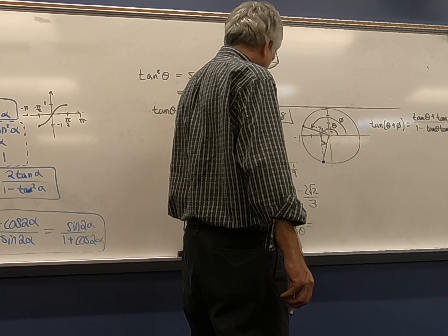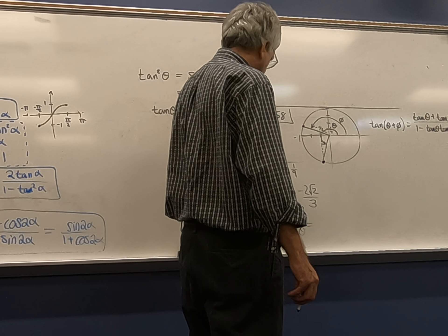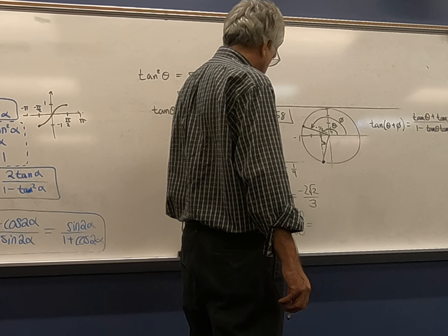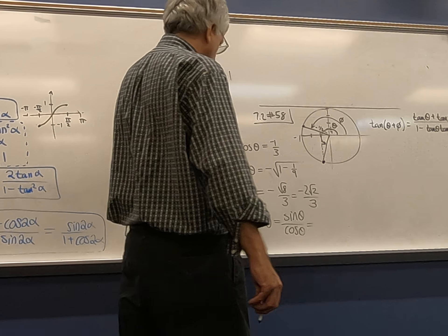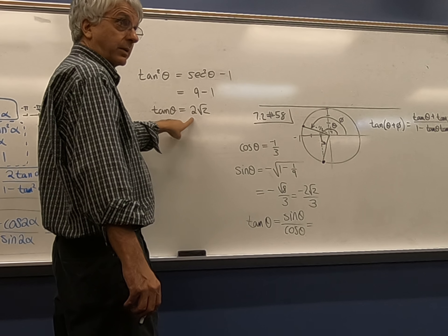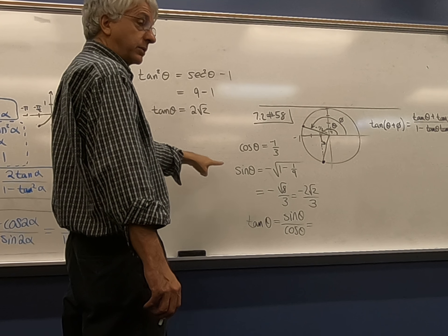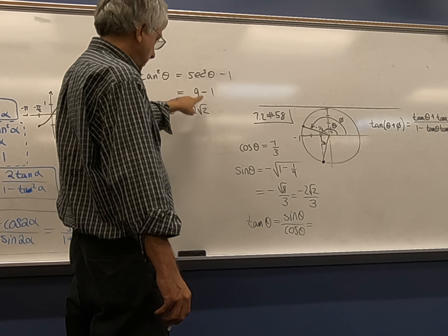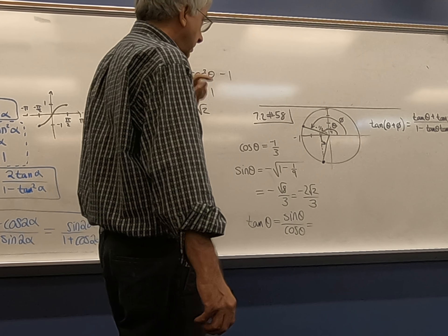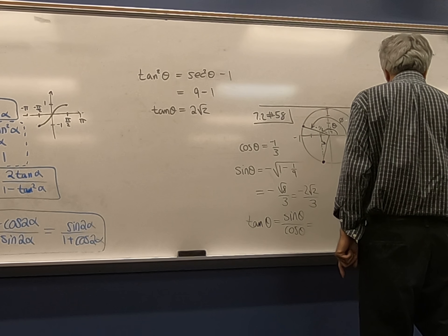Yeah. Right? If I take the ratio of sine to cosine, the negatives are going to cancel and the threes are going to cancel and I'm going to end up with two root two. I think this one's a little faster though, right? I don't have to compute sine first. I just use secant, which is a reciprocal cosine. All right, so this is going to be two root two.